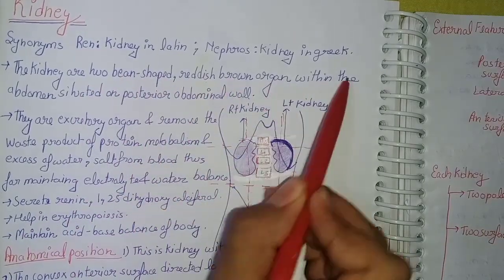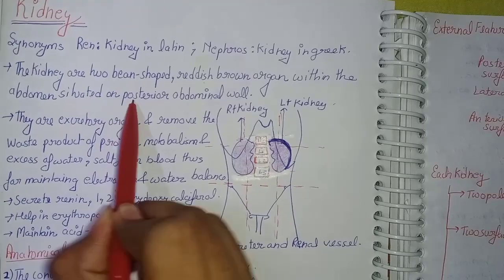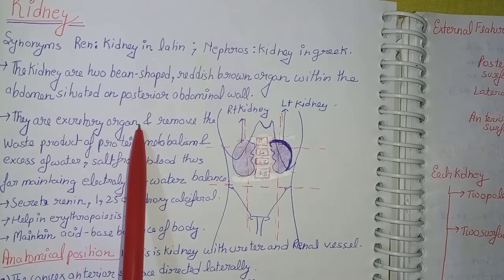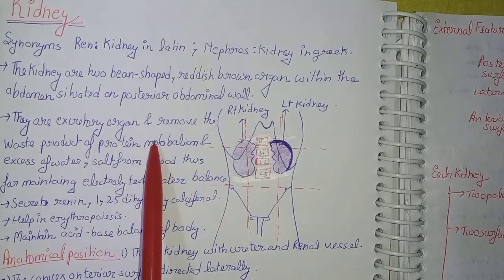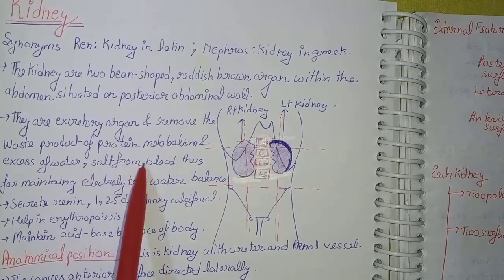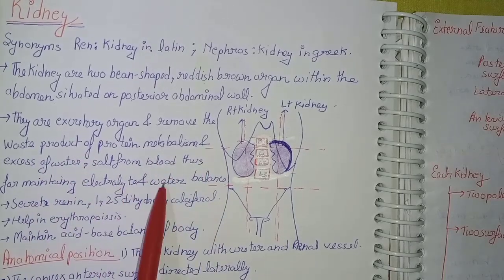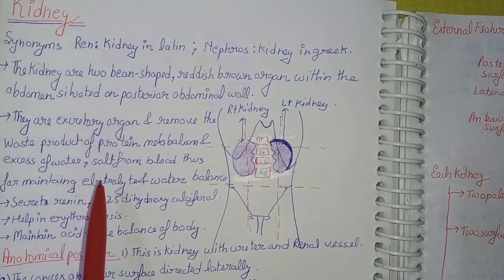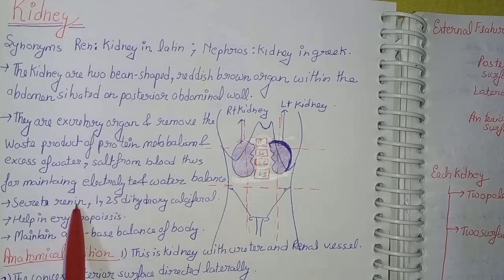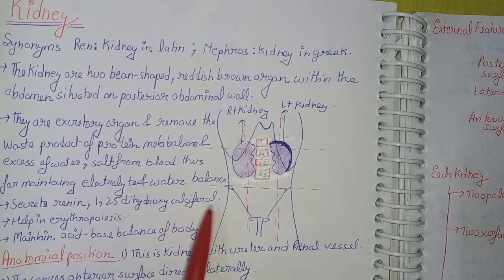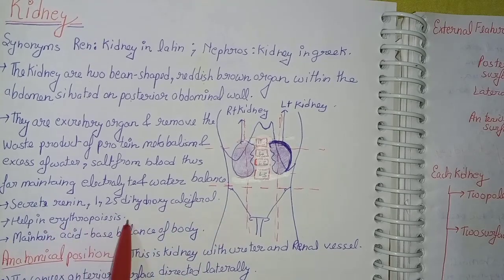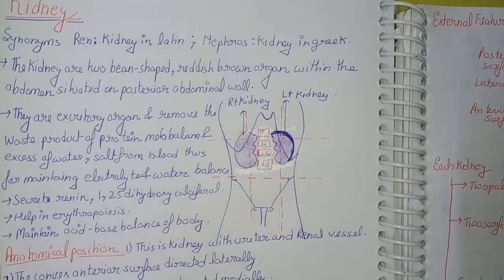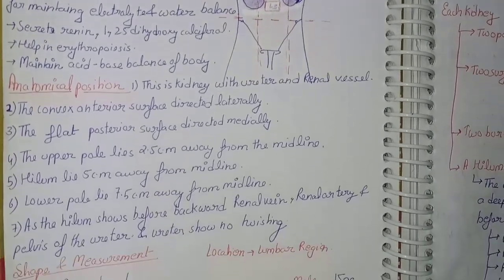Coming to the introduction part of the kidney: the kidneys are two bean-shaped, reddish-brown organs situated on the posterior abdominal wall within the abdomen. They are excretory organs that remove the waste products of protein metabolism and the excess of water and salts from the blood, thus maintaining the electrolyte and water balance. They secrete renin, 1,25-dihydroxycalciferol, help in erythropoiesis, and help maintain the acid-base balance of the body.